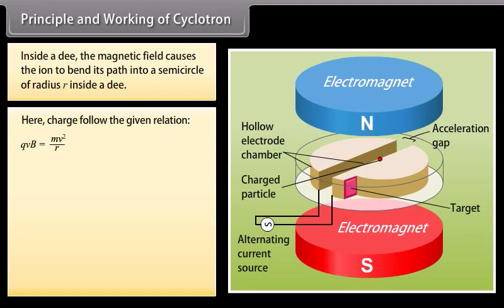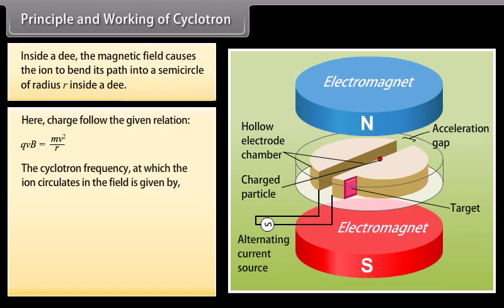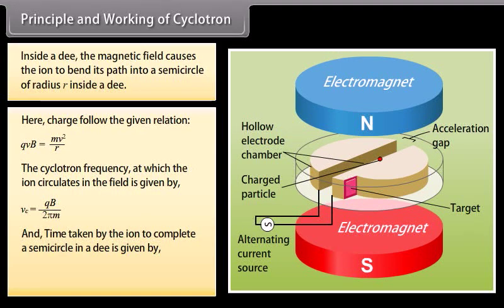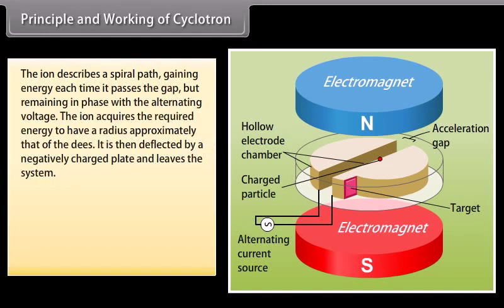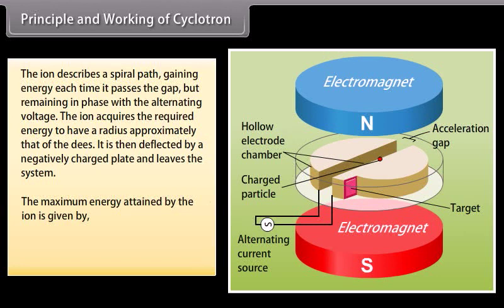Inside the dee, the charge follows: QvB = mv²/r. The cyclotron frequency at which ions circulate is given by QB / (2πm). The time taken by the ion to complete a semicircle is πm / (QB). At resonance, the ion arrives between the dees exactly in time to be repeatedly accelerated and gains energy. The ion describes a spiral path gaining energy each time it passes the gap but remaining in phase with the alternating voltage. It is eventually deflected by a negatively charged plate and leaves the system. The maximum energy attained by the ion is given by B²r²Q² / (2m).